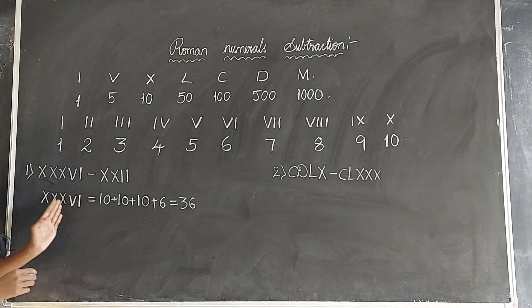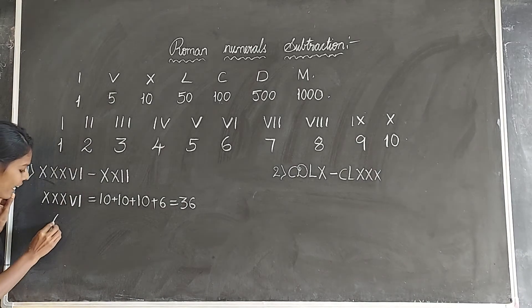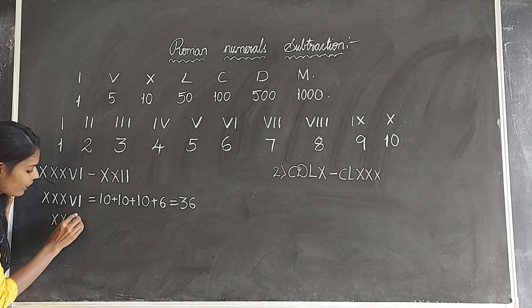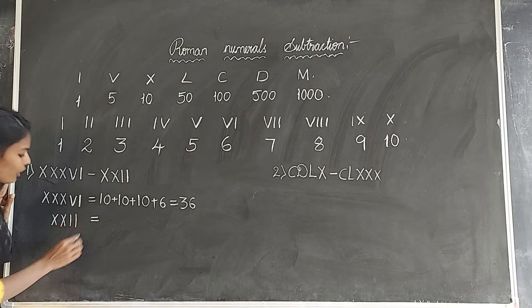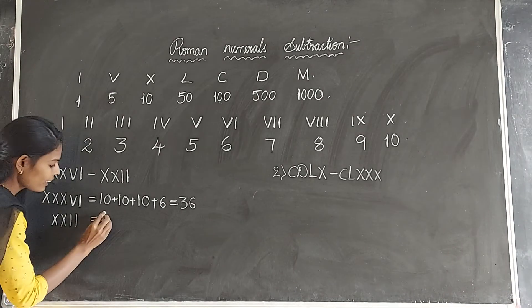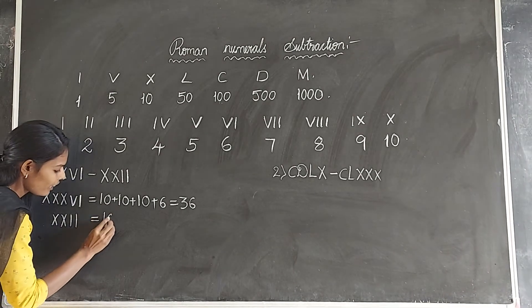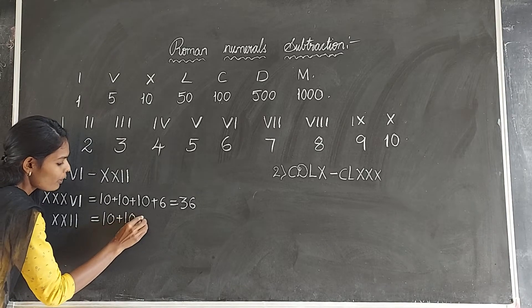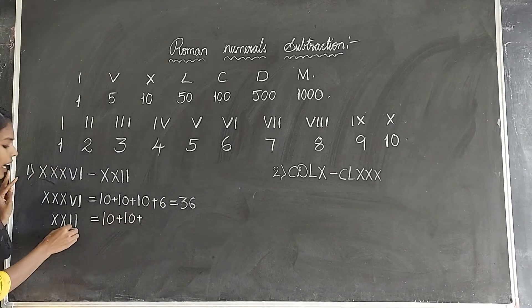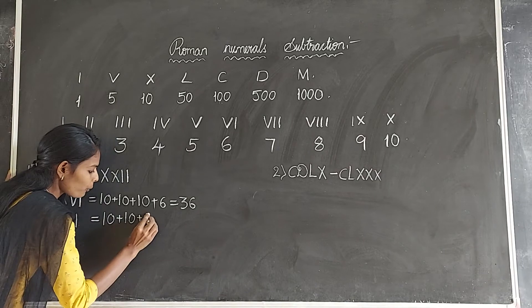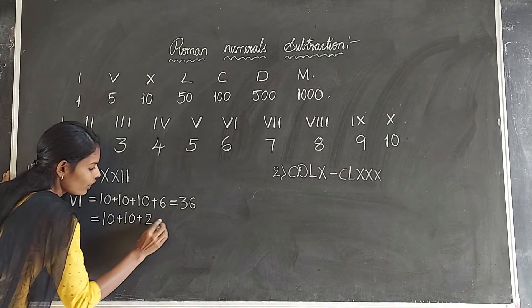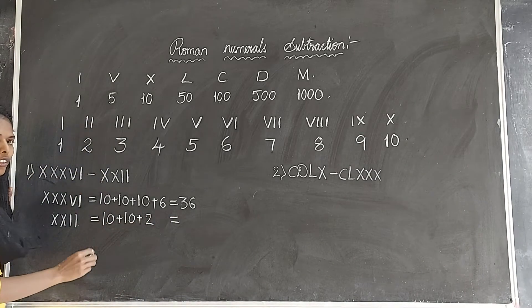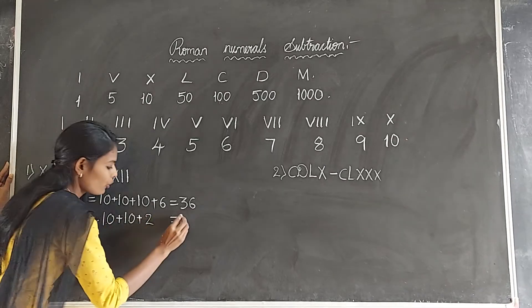Now we take X, X, I, I. What is the value of X? 10. Again, what is the value of X? 10, plus I, I means 2. So 10 plus 10 plus 2 is equal to 22.